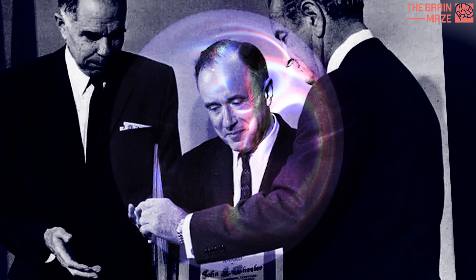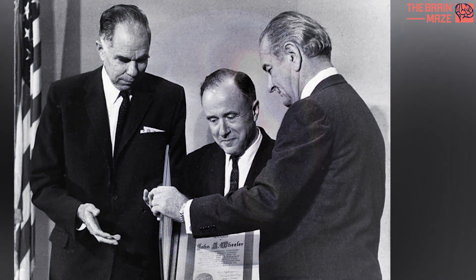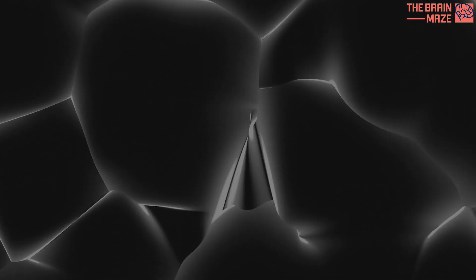Wheeler's attempt to explain the missing positrons wasn't very convincing. While the one-electron theory wasn't meant to be entirely serious, it sparked a fascinating thought experiment. Feynman, intrigued by the concept of time travel, explored the idea of positrons being electrons moving backward in time. While not a literal time machine, this concept helped us understand the behavior of antimatter and its connection to its matter counterpart.